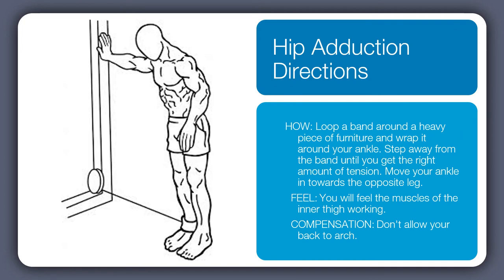For hip adduction standing, you'll need some sort of band or strap. Stand close to where the band is anchored and wrap it around one leg. With the feet about two to three feet apart, bring the leg with the band on it close to the opposite leg, pulling with the inside of the leg against the resistance of the band. Do this on both sides.